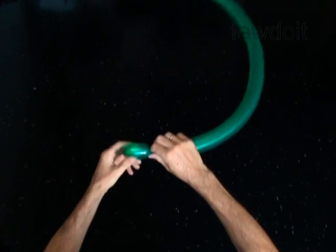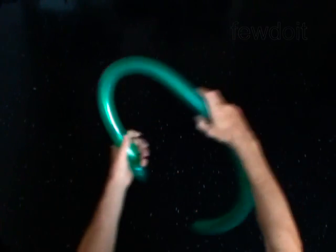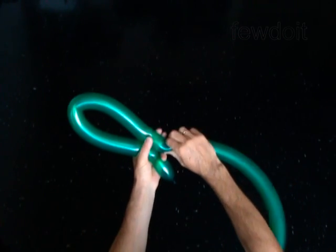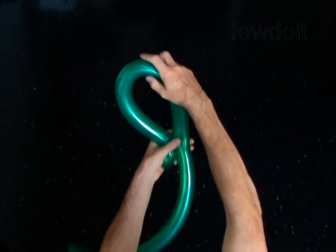Now you will twist three bubbles and lock them in the bird body twist. Use the balloon to measure the head of the person you are making the head for, and then twist the second bubble half of the size of the head.